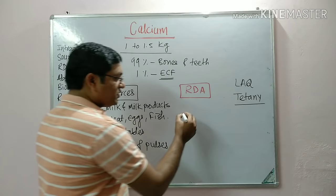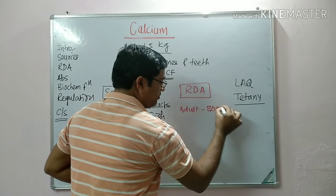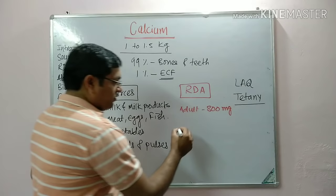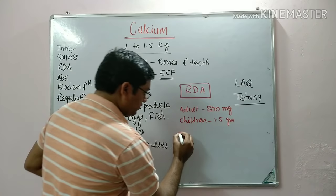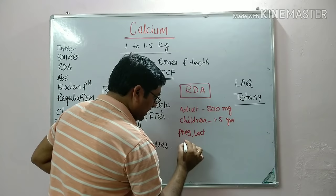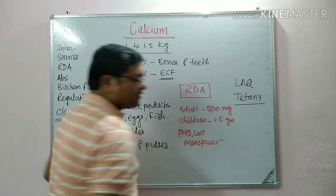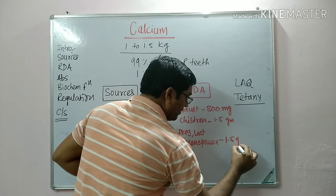In recommended daily allowance: for adults, the RDA of calcium is 800 milligrams. For children it is 1.5 grams. In pregnancy, lactation, and menopause, the requirement of calcium increases and it is up to 1.5 grams. So this is the RDA of calcium.